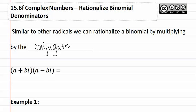Remember, the conjugate looks exactly the same, only the sign is different. Let's FOIL these together and see what we get. We get a squared minus abi plus abi minus b squared i squared.